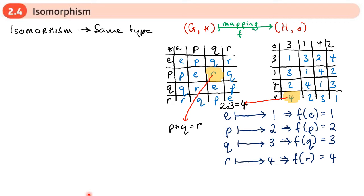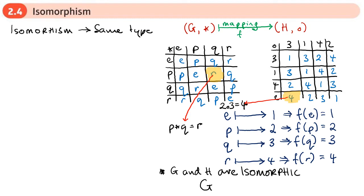Since these two groups have the same structure, the same number of elements, and every element in the first group maps to exactly one element in the second group, we say that G and H are isomorphic. The notation for this uses an equals sign with a squiggly line above it: G ≅ H.